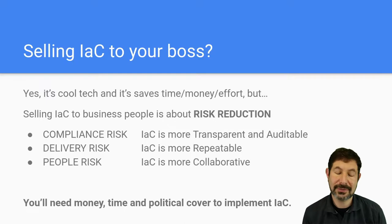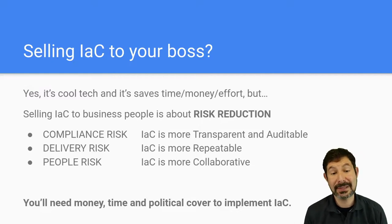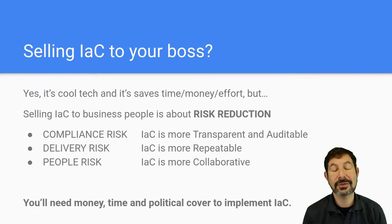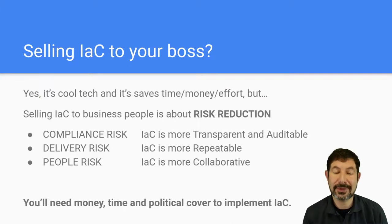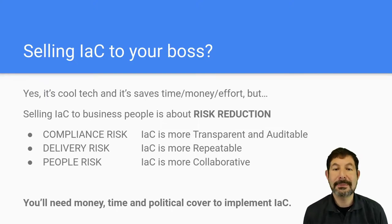The language here is about risk reduction. Infrastructure as code creates more transparent and auditable systems, so they are more compliant and reduce your compliance risk. They are more repeatable, so they reduce your delivery risk, meaning you can deliver systems, code, and infrastructure more confidently. And critically, they are more collaborative — they reduce the bus factor of your organization and reduce your people risk, because everything you do can be translated and repeated for multiple people.